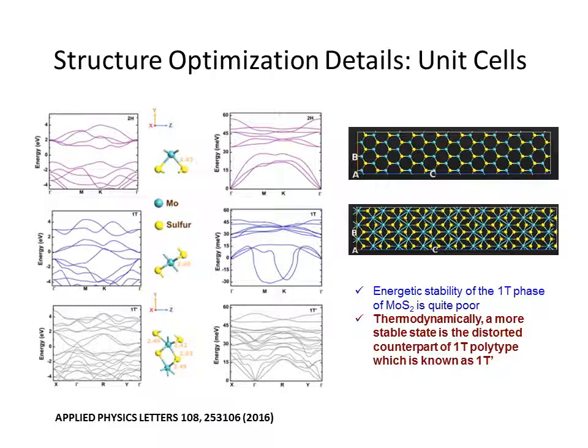Existence of negative frequencies in phonon band structure of 1T phase indicates the structural instability of the material. However, for 1T' phase, we observed no such existence of imaginary or negative frequencies.